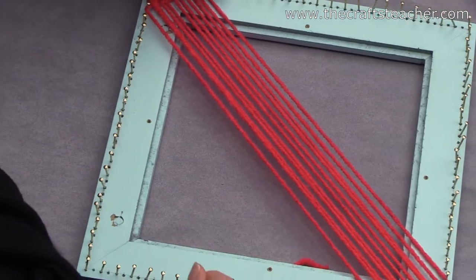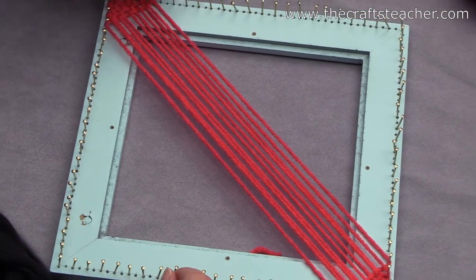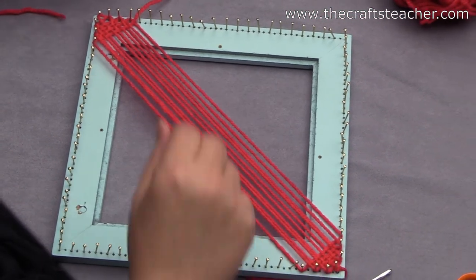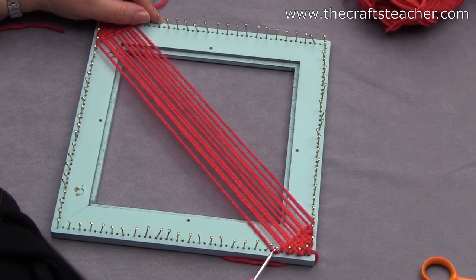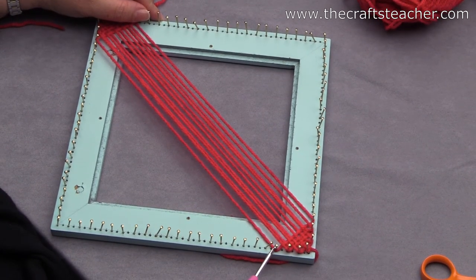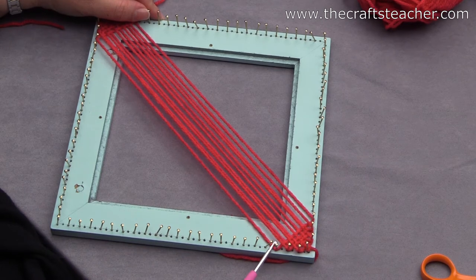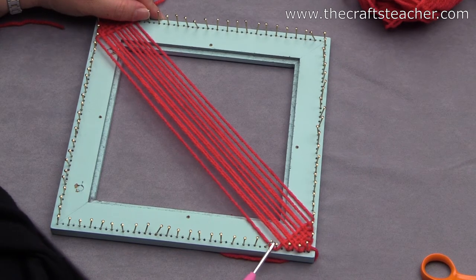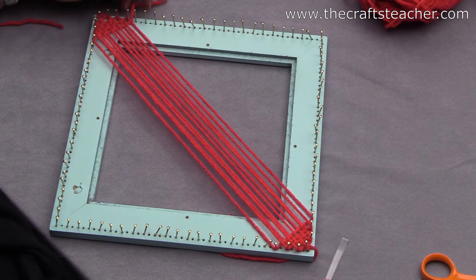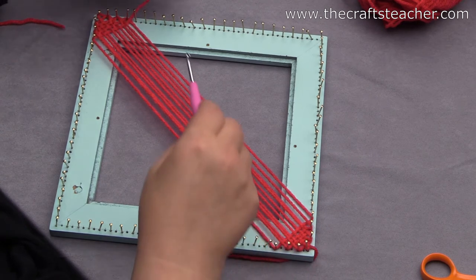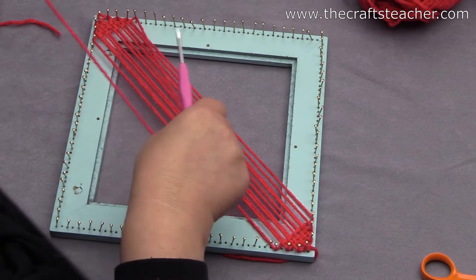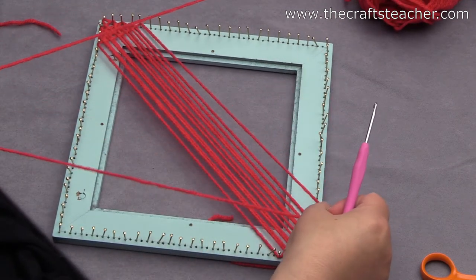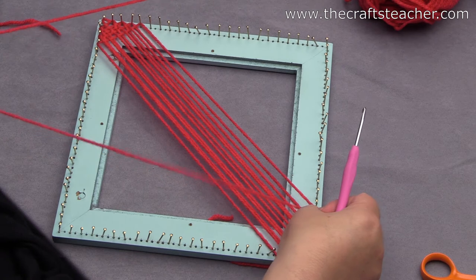Now you just continue like you normally did for a couple of rows. I always like to end with a nail that only has one thread around it. So now I'm going to make 2 more rounds and do it again.